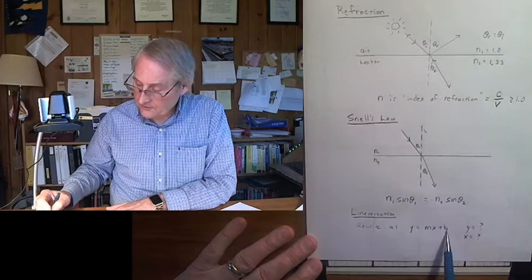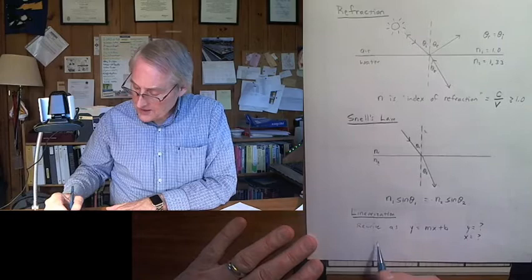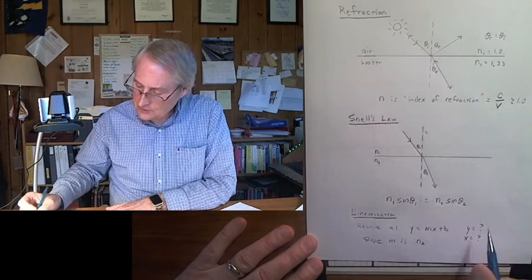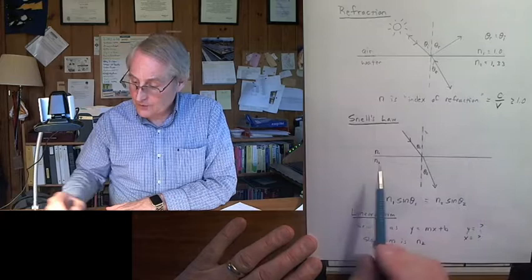So first, the linearization gives us a straight line if you pick the right y and the right x to get a straight line. And of course, b might be zero. But the other thing is, we want the slope to be such that the slope m is n, the index of refraction of the glass.